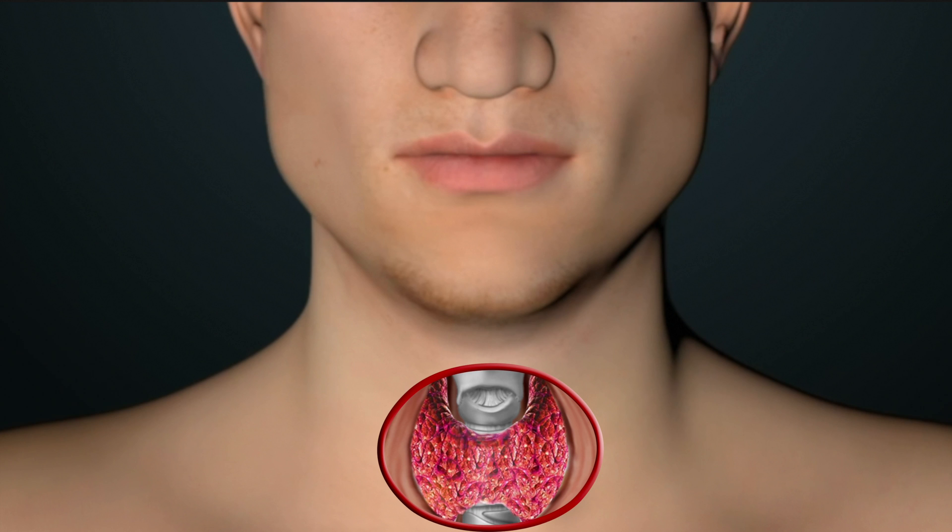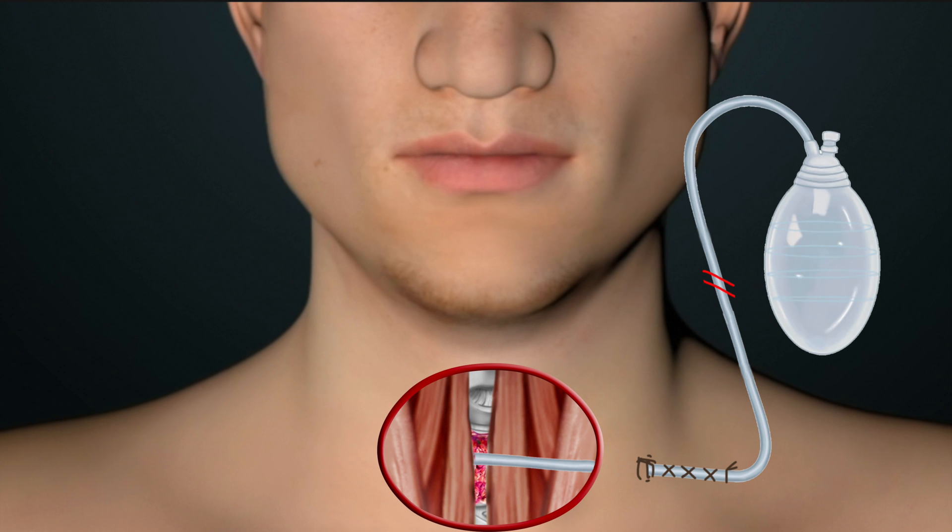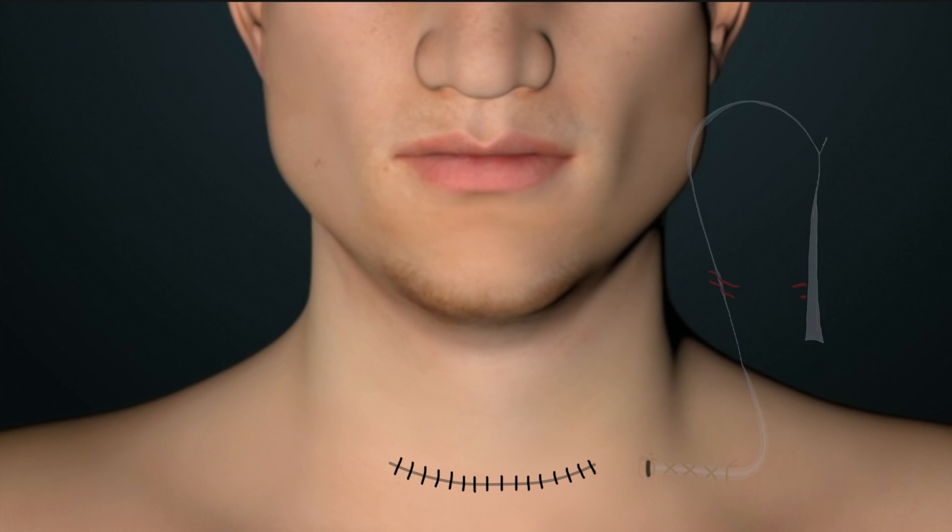Once the overactive parathyroid has been removed, muscles are returned to their normal position and a temporary drain is sometimes placed to remove any fluid that might otherwise collect under the skin.